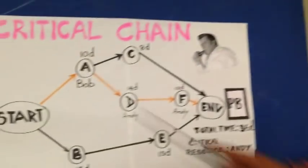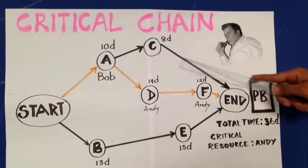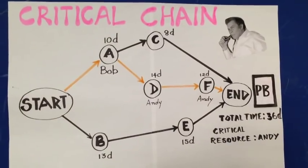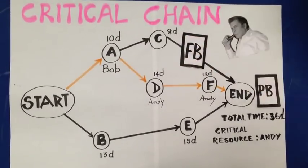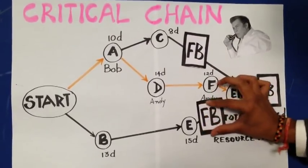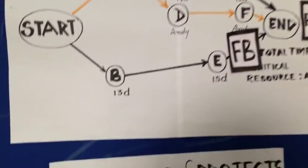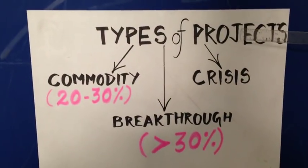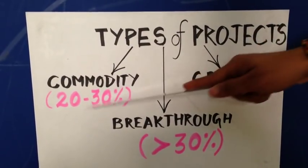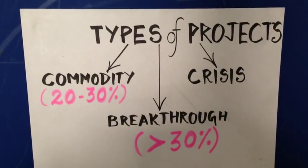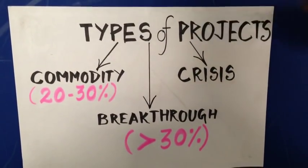The second one is the feeder buffer. In order to prevent the critical chain from delay, buffers are added to the non-critical path wherever it merges with the critical path. We need to analyze the paths that are going to meet the critical chain, and then assign the appropriate weightage to this buffer. Different types of projects require different weightages. Project managers generally assign a weightage between 20% to 30% in regular or commodity projects; however, this figure changes entirely with the nature of the project.